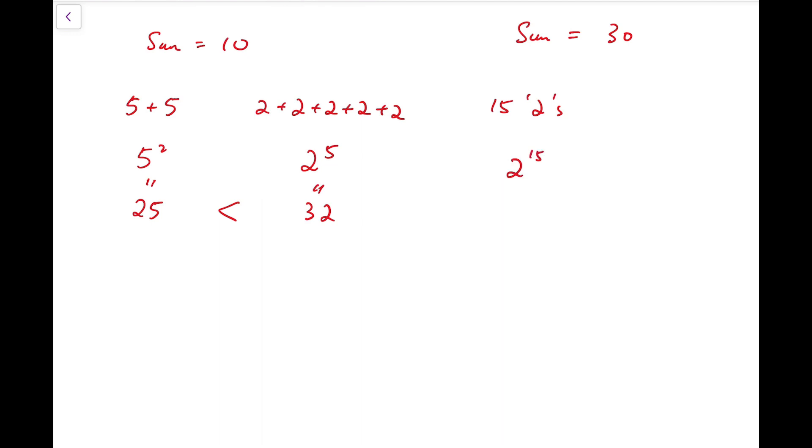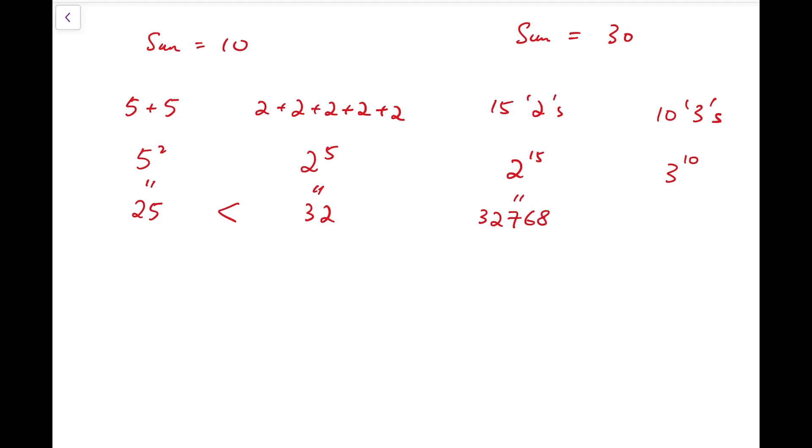However, there is also another way for us to split, to split 30 into 10 threes, then the product is 3 to the 10. By computing, 2 to the 15 is actually 32,768, while the product of those 10 threes, 3 to the power of 10, is actually equal to 59,049.